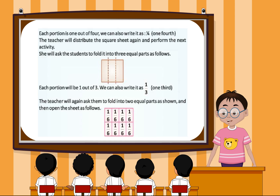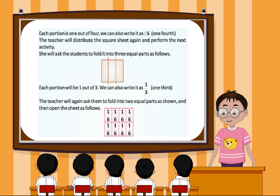Each portion is 1 out of 4. We can also write it as 1 by 4 or 1 fourth. The teacher will distribute the square sheet again and perform the next activity.